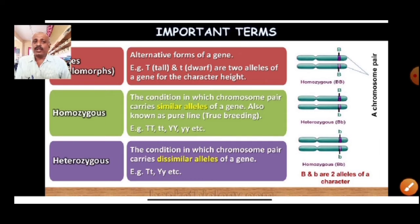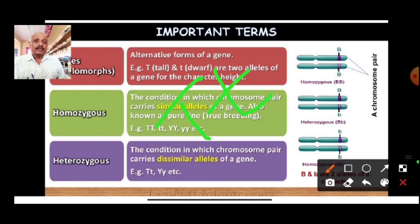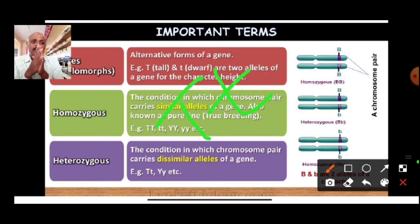The heterozygous condition is the condition in which the chromosome pair carries dissimilar alleles. For example, it is capital T and small t. So this condition is said to be heterozygous. One is capital T and the second one is small t. Capital T represents tall and small t represents dwarf. One chromosome carrying capital T and another carrying small t — hence this condition is called heterozygous.